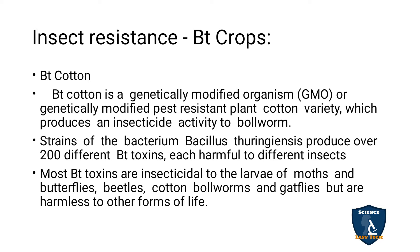Most BT toxins are insecticidal to larvae of moths and butterflies, beetles, cotton boll worms, and gadfly flies, but are harmless to other forms of life. This BT toxin has an insecticidal property seen in Bacillus thuringiensis bacteria which is harmful to the larval forms of moths, butterflies, beetles, cotton boll worms, and gadfly flies.